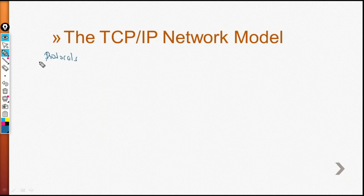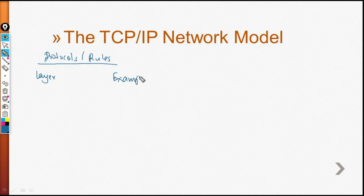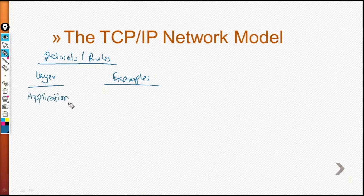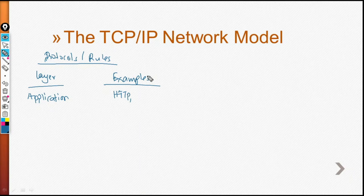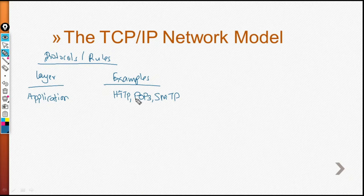You need to understand some of the protocols — you'll hear about these throughout the course. Looking at each layer and examples of protocols implemented there: at the application layer, we have HTTP. That session from Firefox to the Google servers uses HTTP, sometimes HTTPS. Then there is POP3, Post Office Protocol version 3, and SMTP, Simple Mail Transfer Protocol. HTTP is HyperText Transfer Protocol; POP3 is for receiving emails; SMTP is for sending emails.